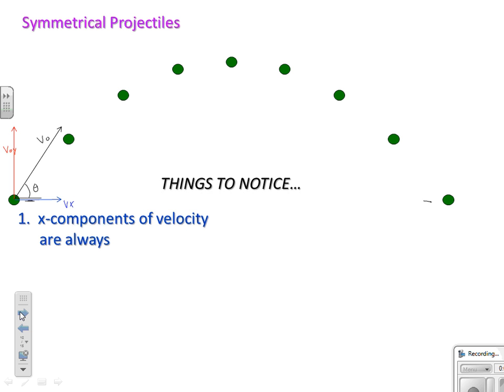What would be nice is if we could figure out what the velocity looks like at every other instant in time on this trajectory. We can do that with the help of some things we can notice. One thing we know about any projectile is that the x components, the horizontal component of velocity, those are all the same or they're all equal.